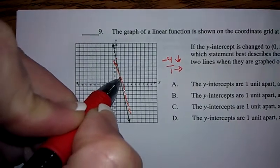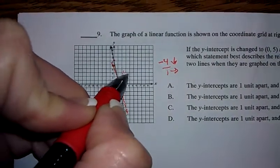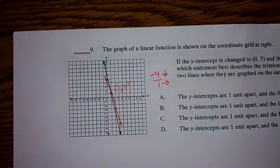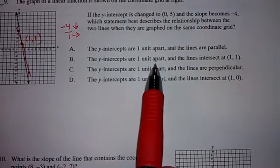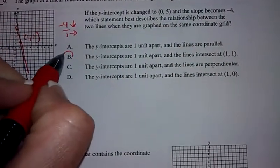It looks like the two lines intersect right there at that point. That point is 1, 1. It says the y-intercepts, and there it is right here. The y-intercepts are one unit apart and the lines intersect at 1, 1.